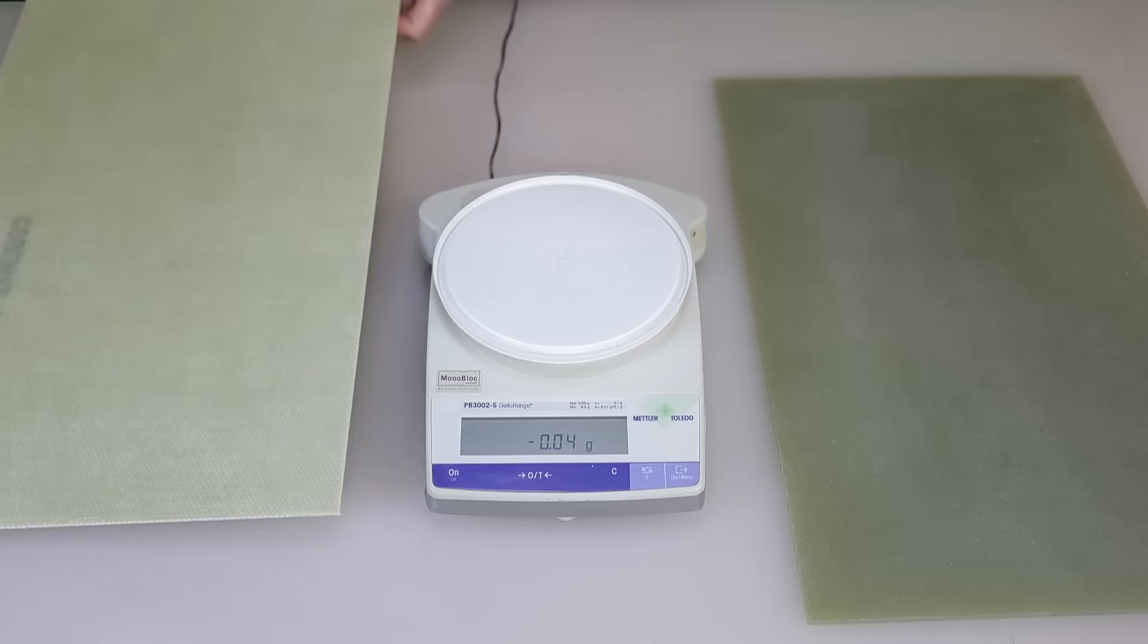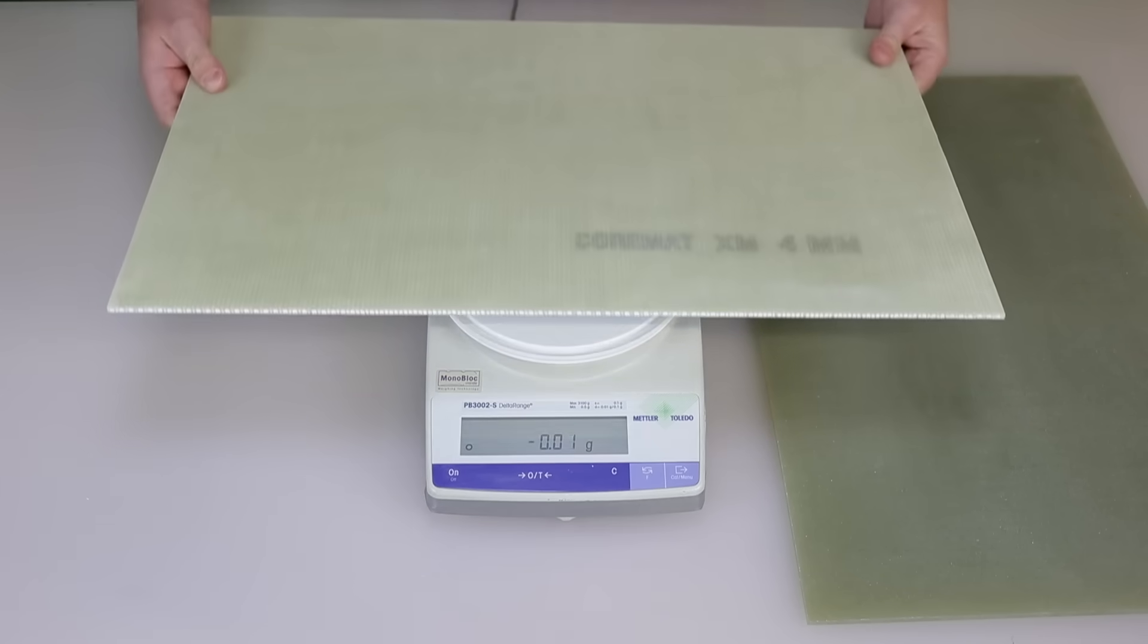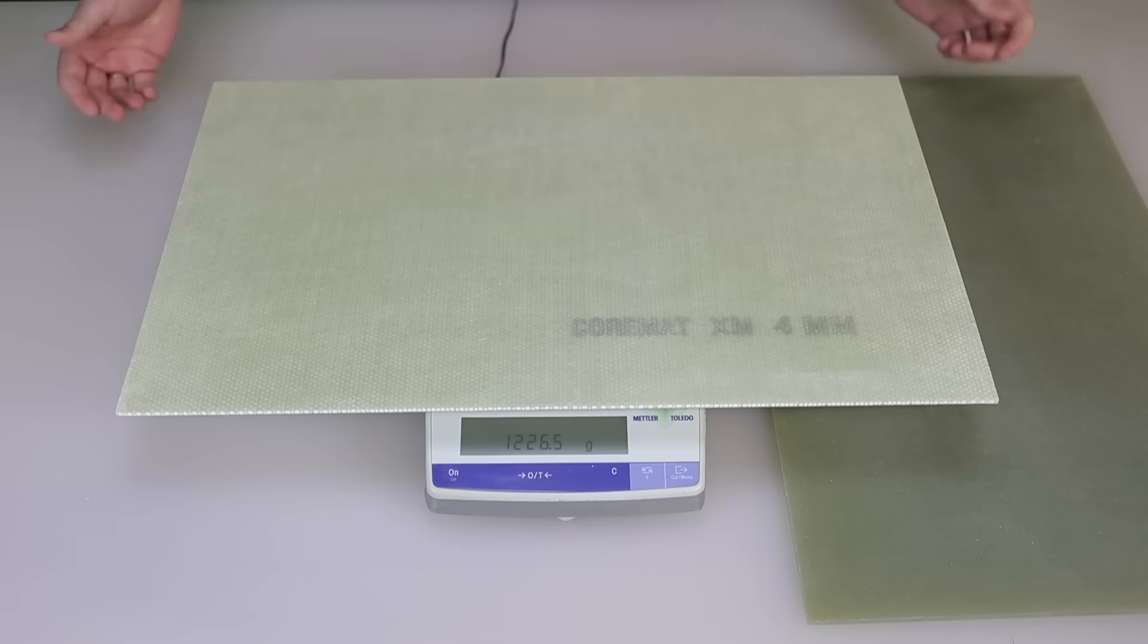Now the core mat panel weighs in at about 1.2 kilograms, which equates to a rough saving of about four kilograms per square meter.